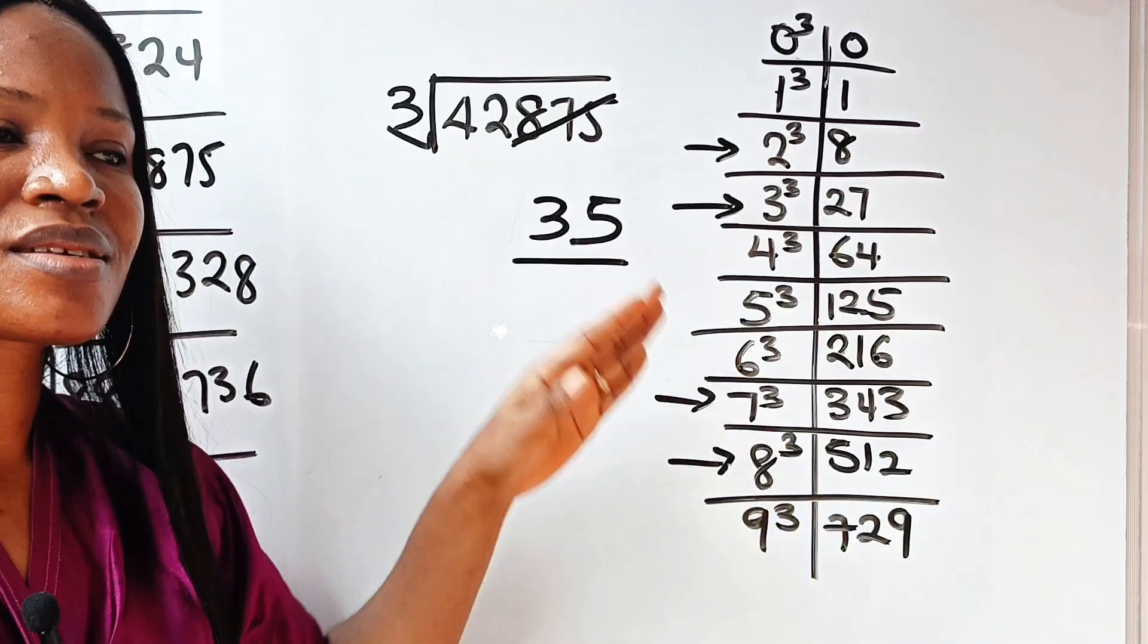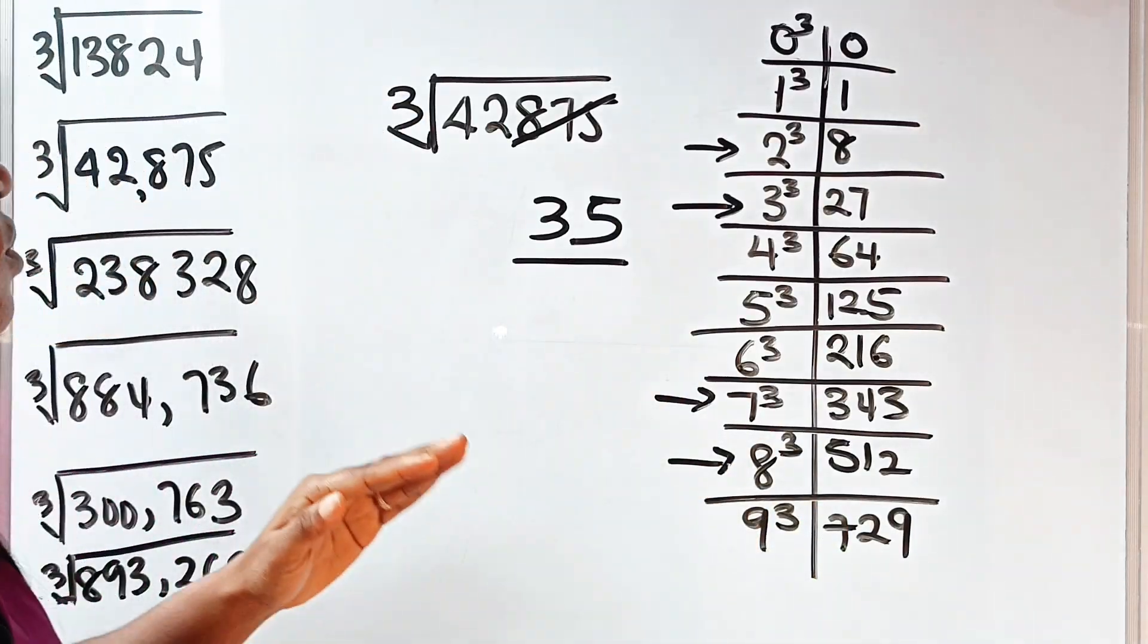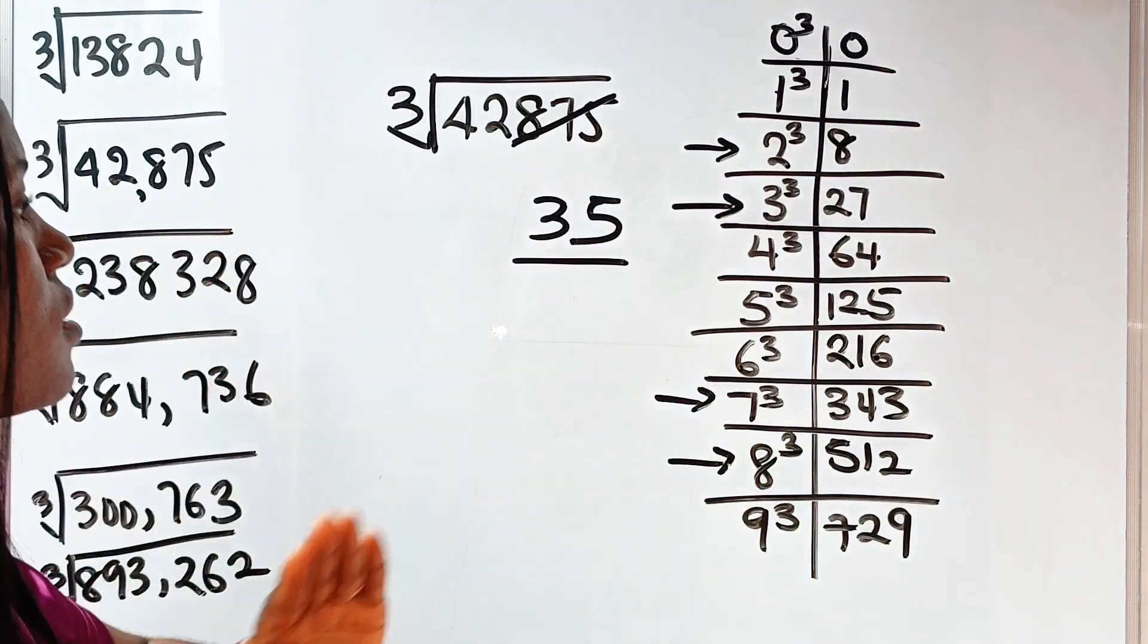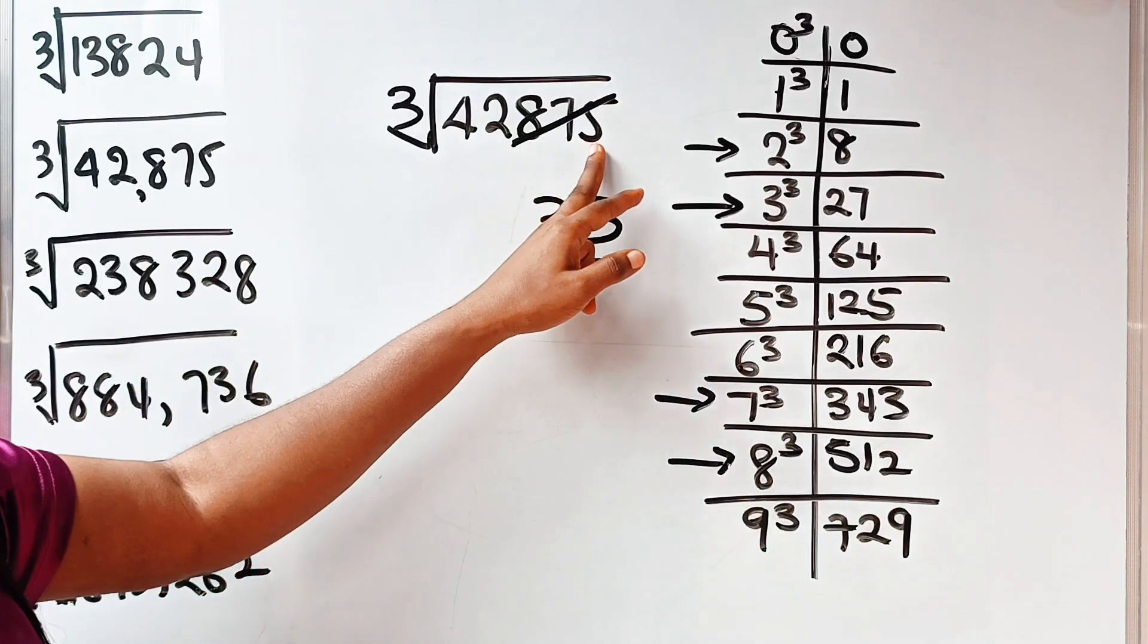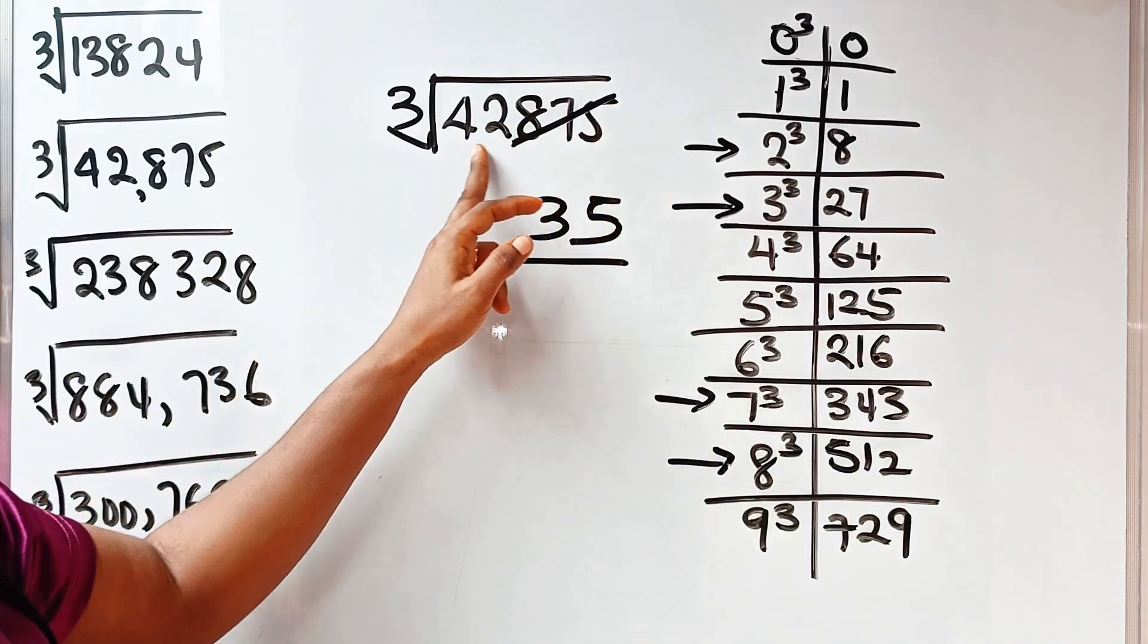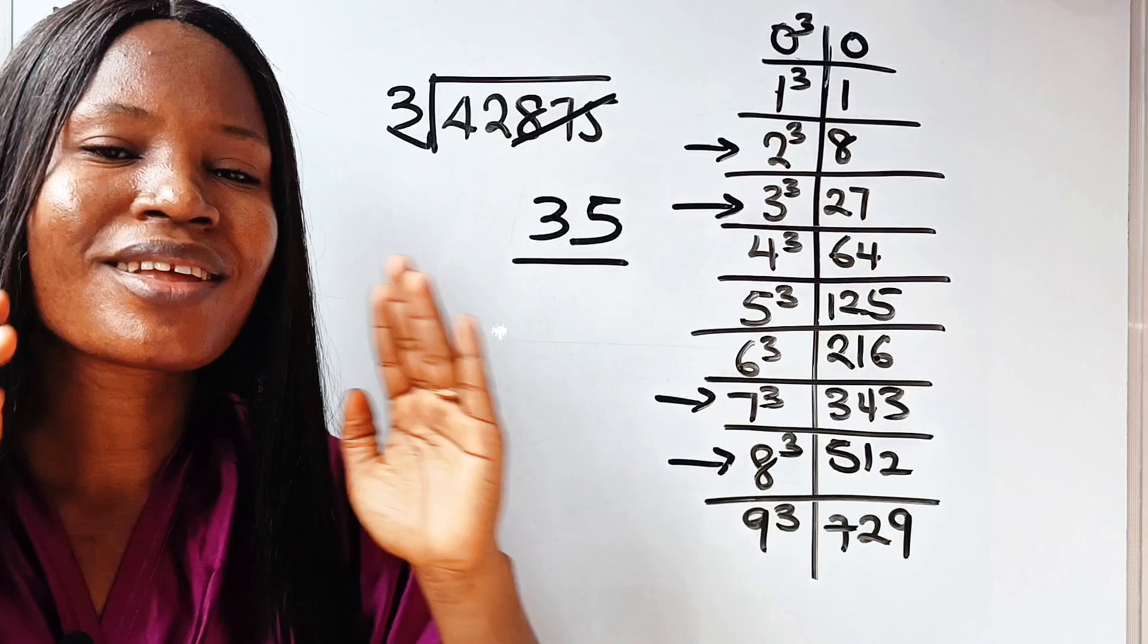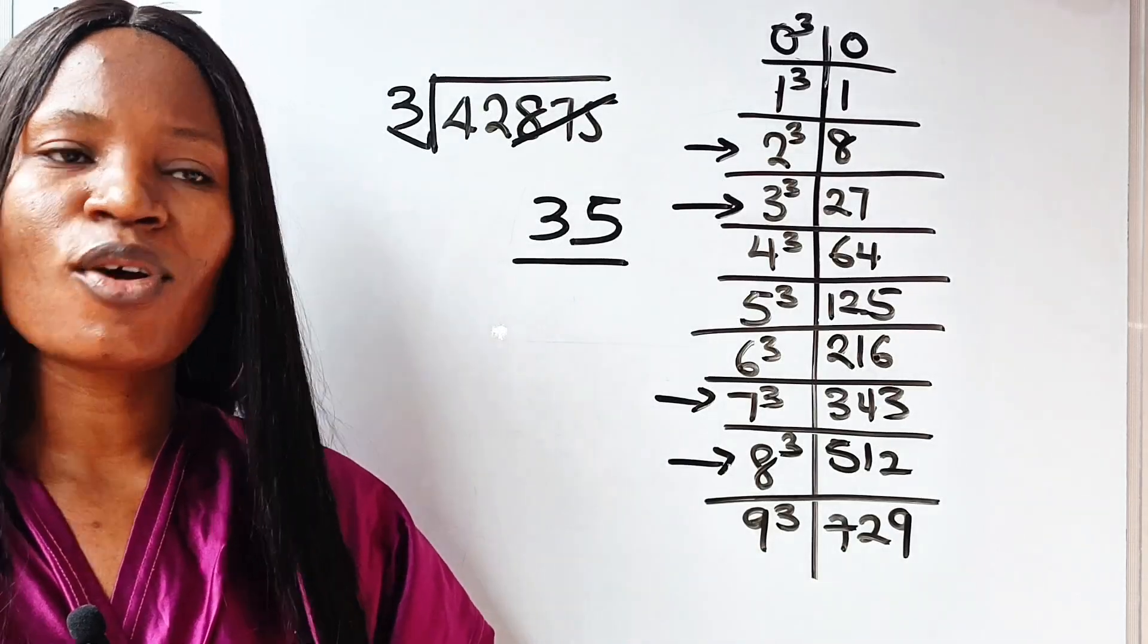If you master this in 3 seconds, you'll be able to say cube root of this is 35, because your mind will tell you already that this is 5. And if you cancel this in your mind, 42, you are getting 3 in 3 seconds.